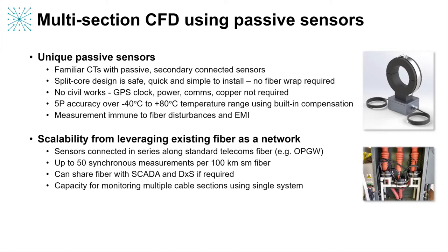Each one of these sensors is very safe, quick and simple to install because each component is very familiar to installers in the industry. Because each sensor is passive, there's no civil works required for installation — no auxiliary power supplies, active telecoms or GPS outside the substation. Each sensor has a very wide operating temperature range, and each sensor will also passively tell us its own temperature, which allows us to actively compensate for any temperature changes in the data generated by the interrogator.